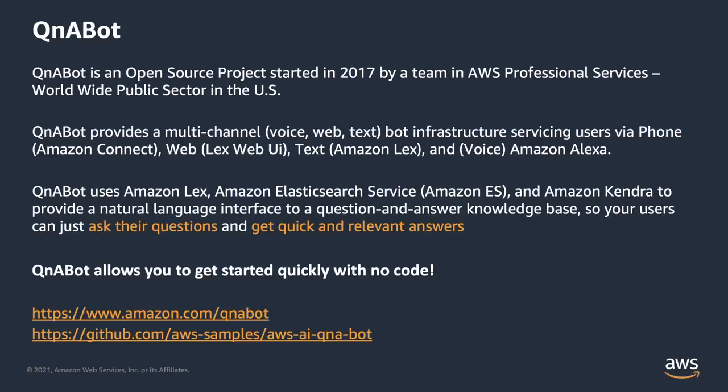Q&A Bot is an open source project that was started in 2017 by a team in AWS Professional Services. Q&A Bot provides a multi-channel interface — for example, voice, web, SMS, and others — to a question and answer chatbot. The solution is built with AWS services such as Amazon Lex, Amazon Elasticsearch Service, and Amazon Kendra, so users can simply ask their questions in a natural way and get answers regardless of the channel.